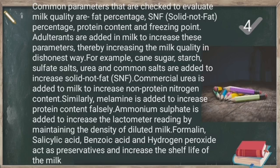Commercial urea is added to milk to increase non-protein nitrogen content. Similarly, melamine is added to falsely increase protein content. Ammonium sulfate is added to increase the electrometer reading by maintaining the density of diluted milk. Formalin, salicylic acid, benzoic acid, and hydrogen peroxide act as preservatives and increase the shelf life of the milk.